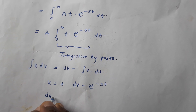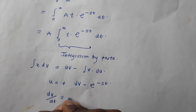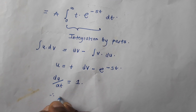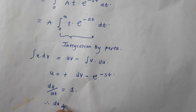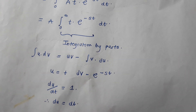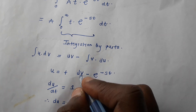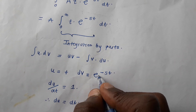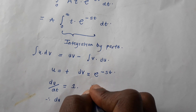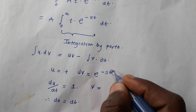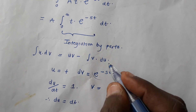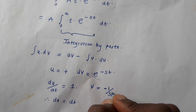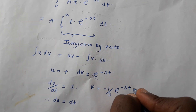So du/dt is going to give us 1. Therefore, du equals dt. Then from dv = e^(−st), we get v by integrating this function, and this gives us minus 1 over s times e^(−st).